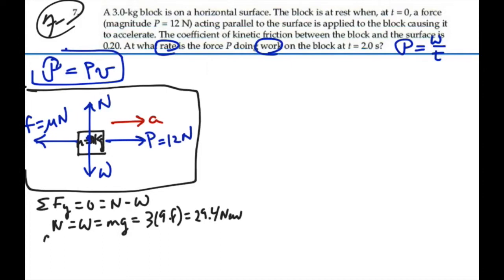And then the frictional force is mu times the normal force. That's going to be 0.2 times 29.4, which will give us 5.88 newtons.